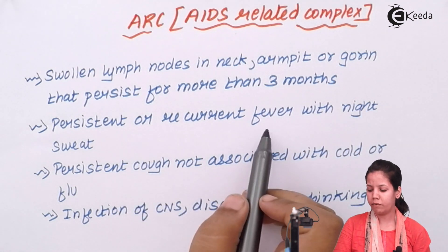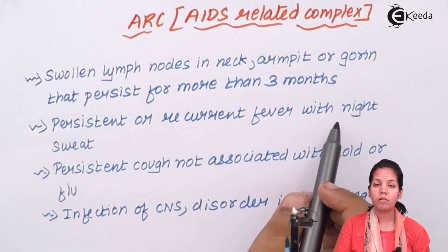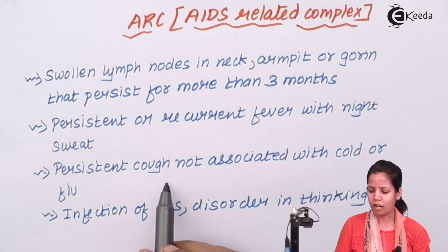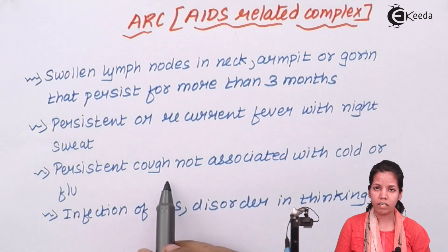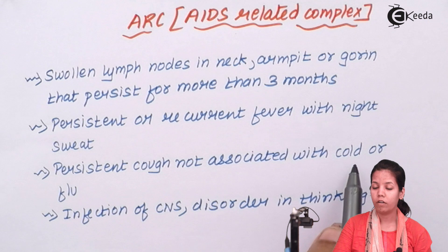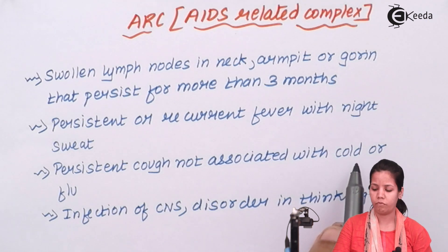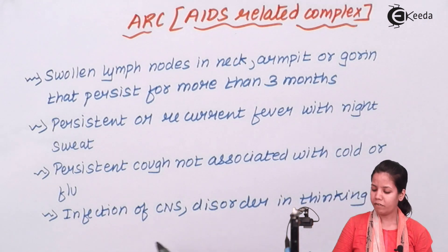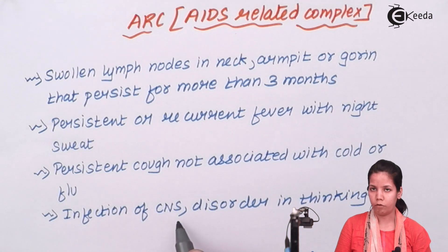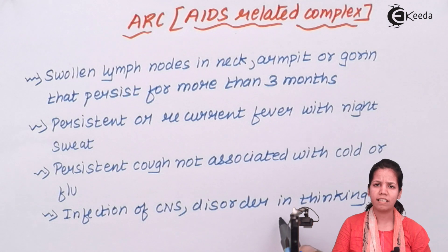There is persistent or recurrent fever with night sweats, and the person sweats profusely day and night. There is a persistent cough with yellowish color secretions, never associated with a cold or flu — it is just a persistent dry cough. Infections can occur in the cerebrospinal fluid, especially to the central nervous system. Disorders in thinking, anxiety, and tiredness are also symptoms.